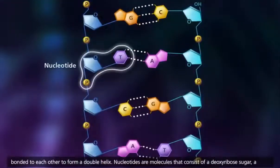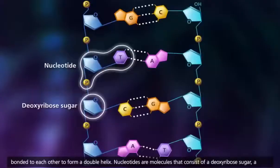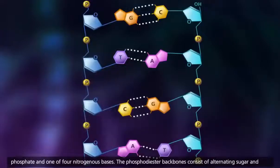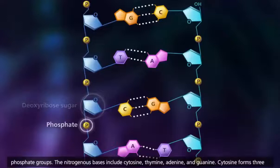Nucleotides are molecules that consist of a deoxyribose sugar, a phosphate, and one of four nitrogenous bases. The phosphodiester backbones consist of alternating sugar and phosphate groups.